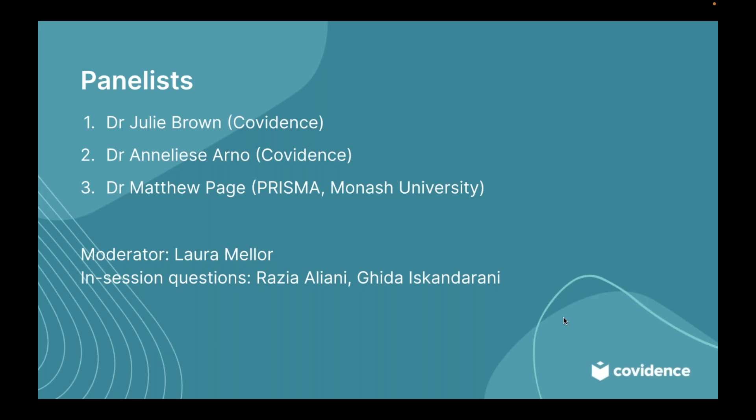Dr Matthew Page is a senior research fellow and deputy head of the methods and evidence synthesis unit in the School of Public Health and Preventive Medicine at Monash University. His research aims to identify and address correctable weaknesses in the design, conduct and reporting of systematic reviews of health research. He co-led the development of the PRISMA 2020 statement and was a member of the core group who developed version 2 of the Cochrane risk of bias assessment tool for randomised trials. Dr Annalise Arno is a product manager with Covidence and a project manager for living guidelines at the School of Public Health and Preventive Medicine at Monash University. Her PhD, completed in 2022 at University College London, focused on the use of automation for health evidence synthesis. Annalise is based in Melbourne, Australia.